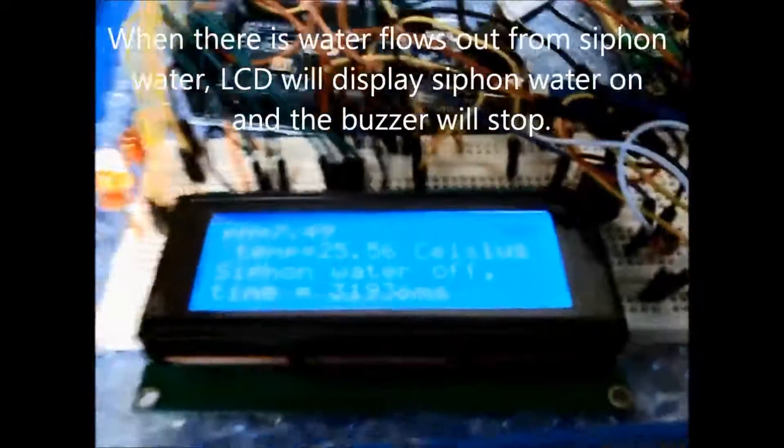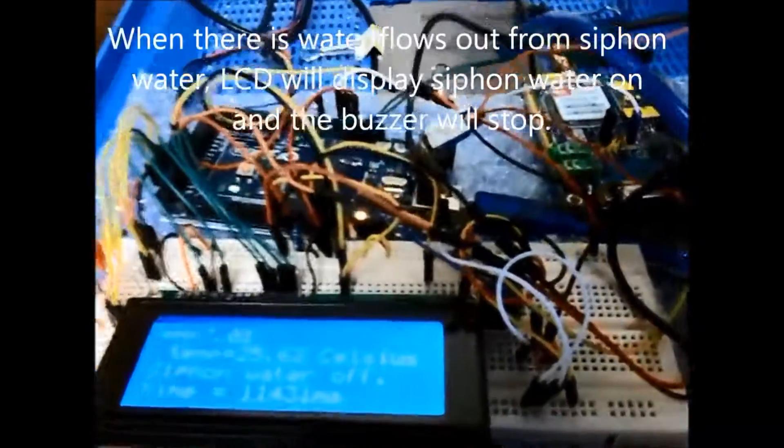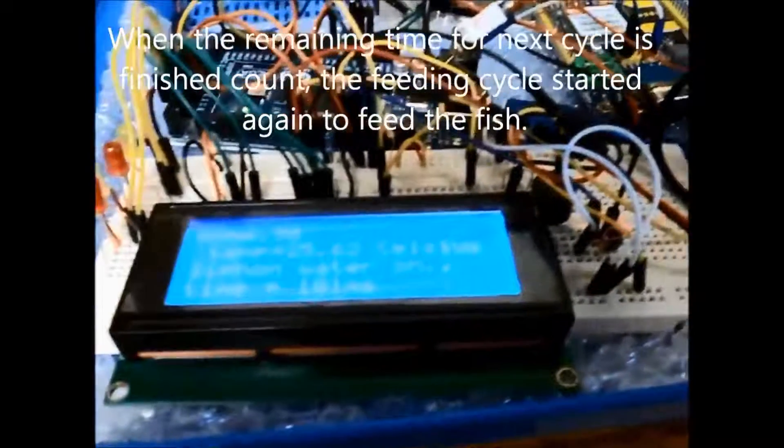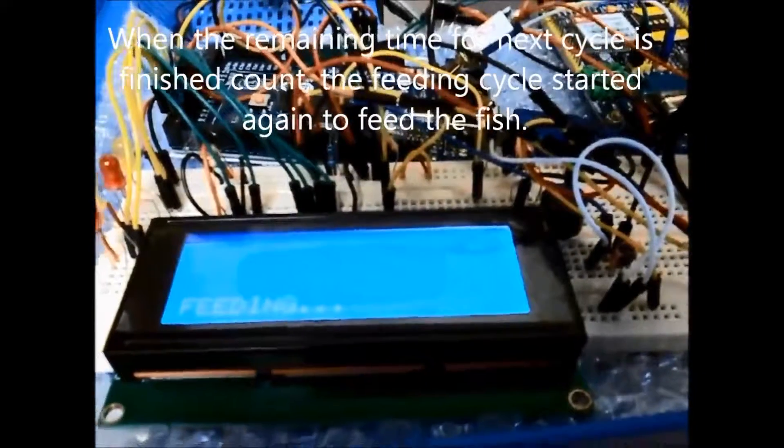When there is water flowing out from the siphon water, the LCD will display siphon water on and the buzzer will stop. When the remaining time for the next cycle is finished counting, the feeding cycle starts again to feed the fish.